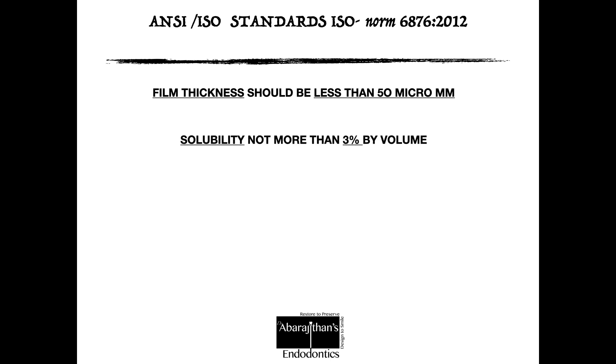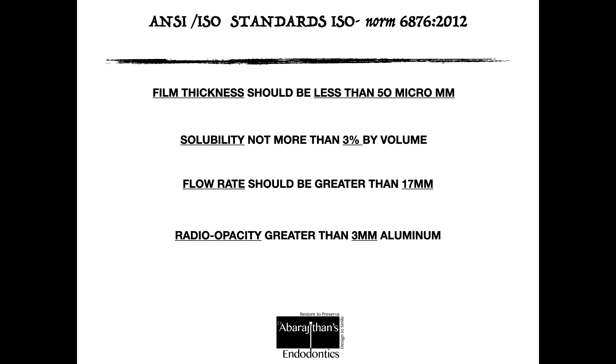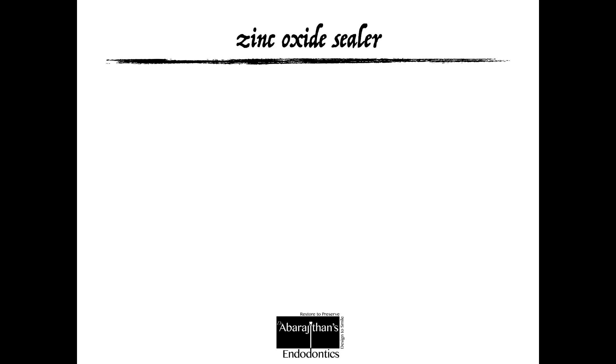The ANSI and ISO standards have set some guidelines that a sealer must meet. The film thickness should be less than 50 micrometers. Solubility should not be more than 3% by volume of its final set cement. The flow rate should be greater than 17 mm, and radio-opacity should be greater than 3 mm aluminum, so the sealer can be adequately seen on your post-operative radiograph.